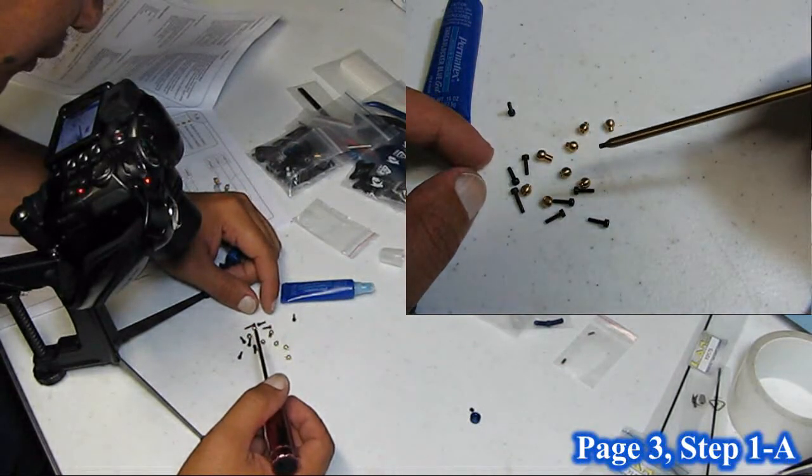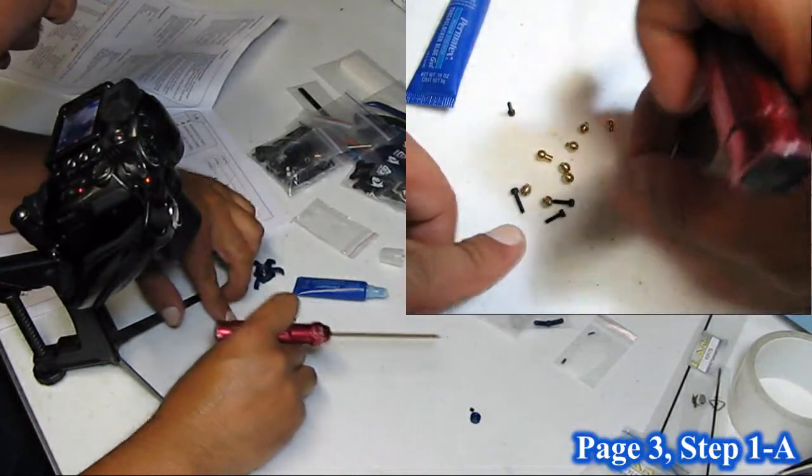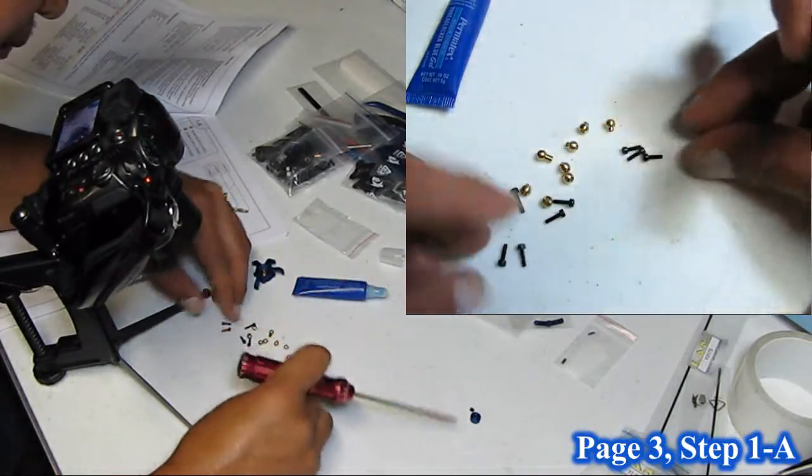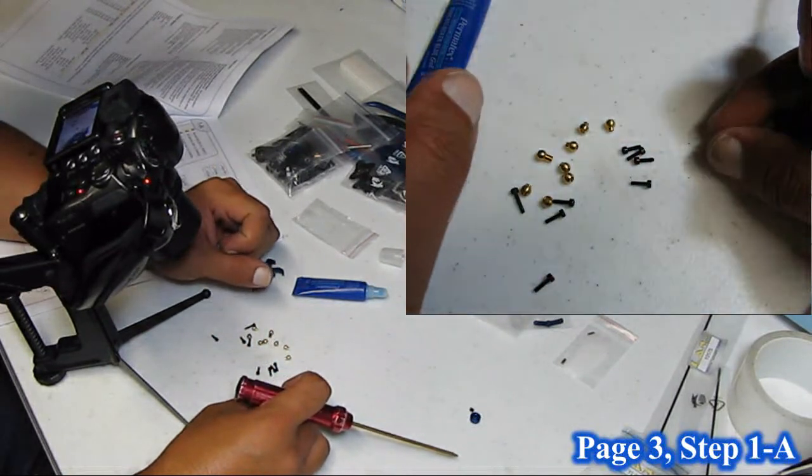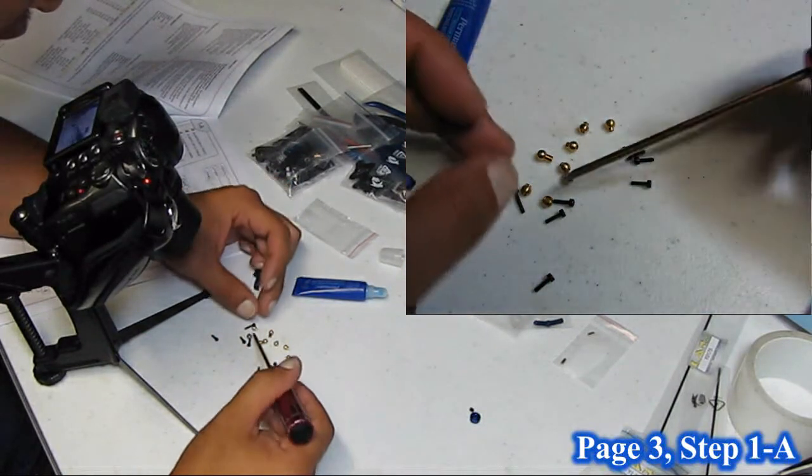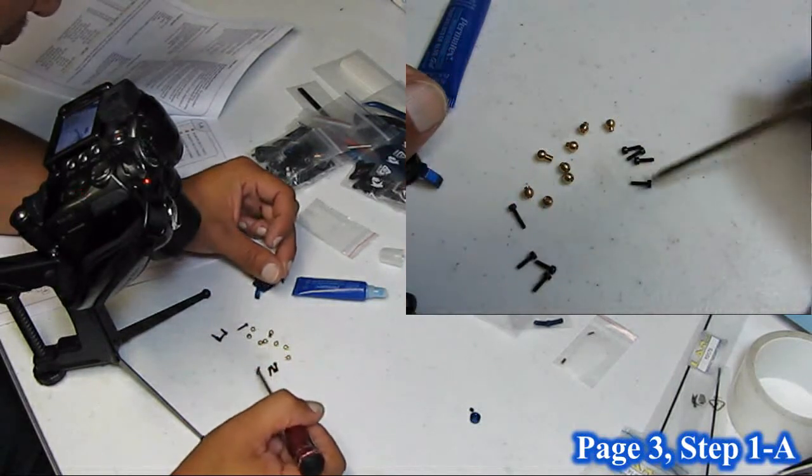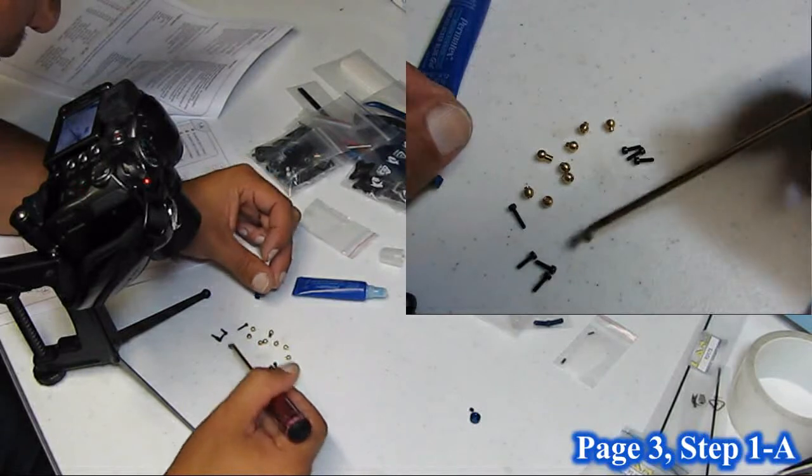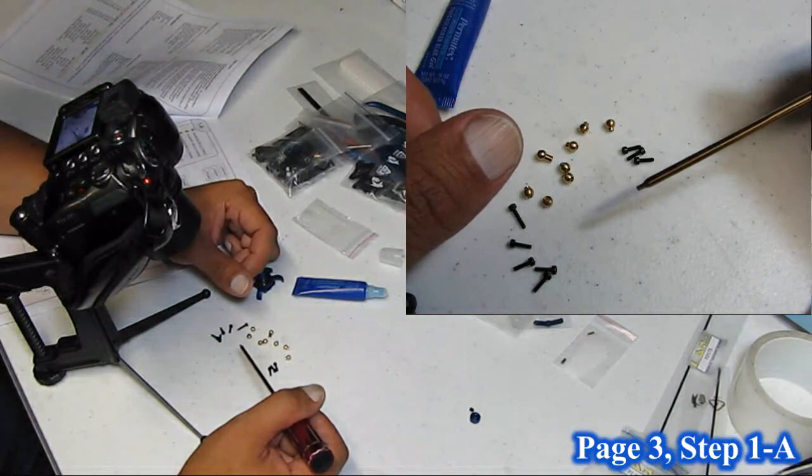And then we're going to have to select three of the same length screws, which are going to be these ones right here. The manual diagrams which part number goes where, so these slightly shorter length screws, should be seven of them, are M1.6 by 6.